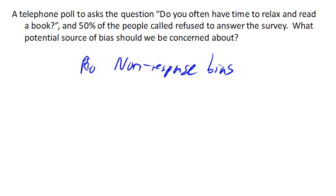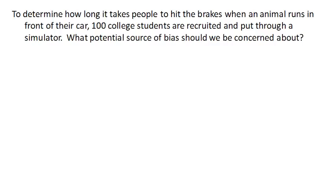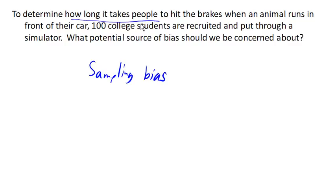One last one. To determine how long it takes to hit the brakes when an animal runs in front of the car, a hundred college students are recruited and put through a simulator. The issue here goes back to where we started — this is what's called sampling bias. It really depends upon who our target population was, but if we're trying to figure out how long it takes people in general, then using college students as our sample is probably going to slant the results.